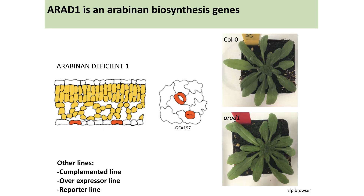To identify genes causing this pattern, we used online databases to find genes more highly expressed in guard cells than in surrounding mesophyll or epidermal pavement cells. We identified one previously characterized arabinan synthesis gene called Arabinan Deficient 1, or ARAD1, which is more highly expressed in guard cells than in mesophyll. We generated T-DNA knockout lines of this gene and also have complemented lines, overexpressors, and reporter lines coming through the cloning process. The knockout plants look indistinguishable from controls with no obvious phenotype in the growth chamber.